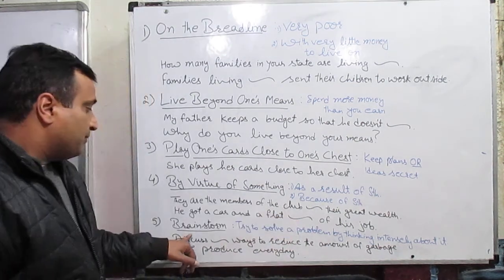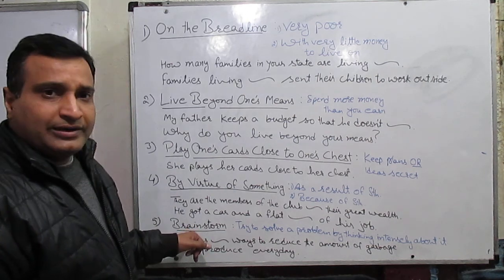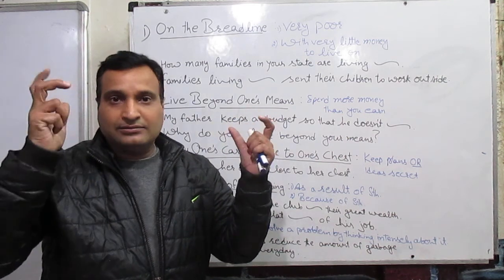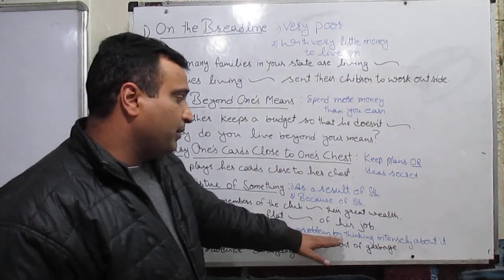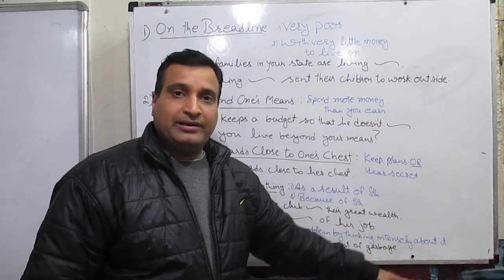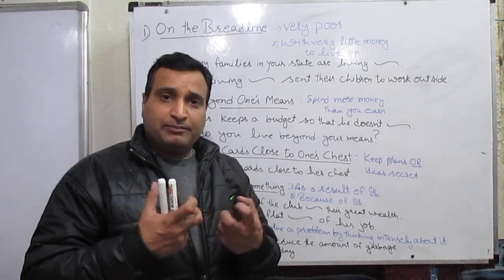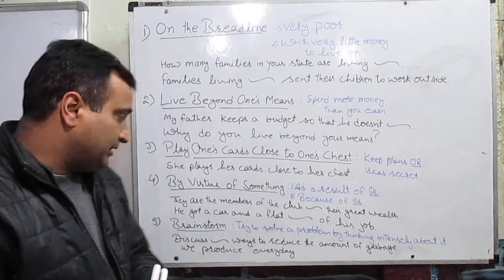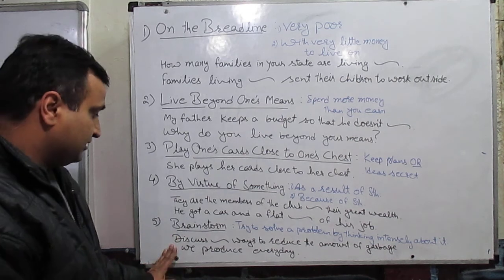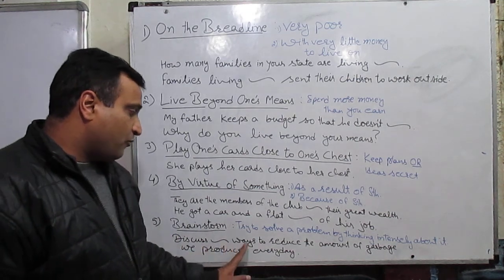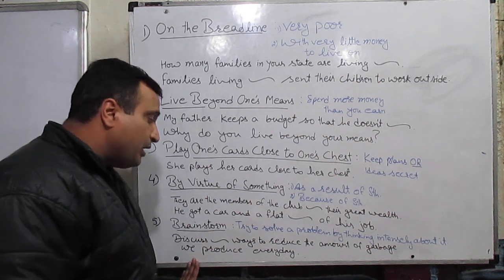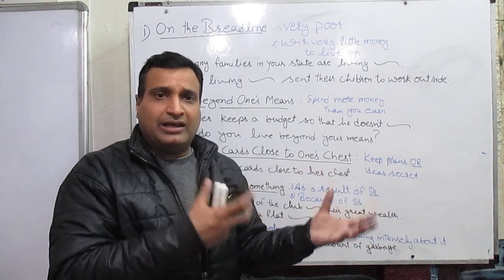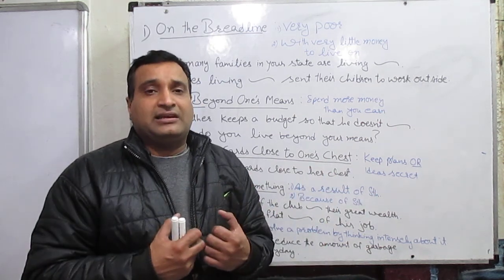'Brainstorm' — it means 'manthan karna', a storm in the mind. It means to try to solve a problem by thinking intensely about it. When we have a problem, we think a lot about it from many angles — we call that brainstorming. For example: 'Brainstorm ways to reduce the amount of garbage we produce every day.' How do we reduce garbage every day? We need to brainstorm ideas for that.